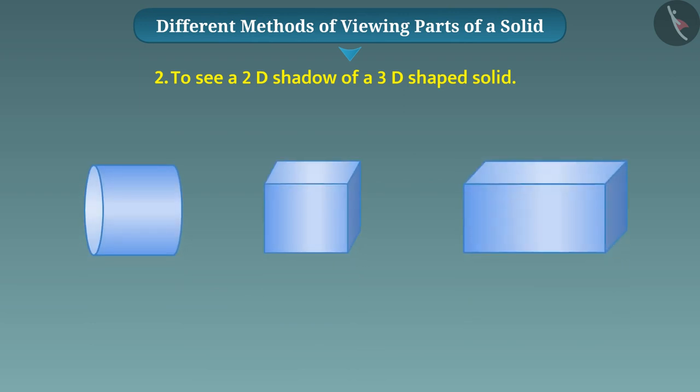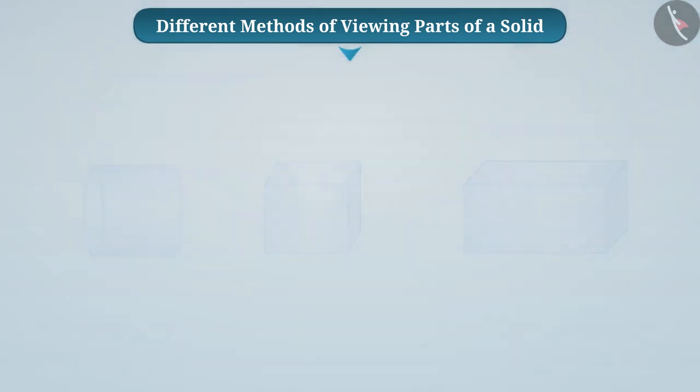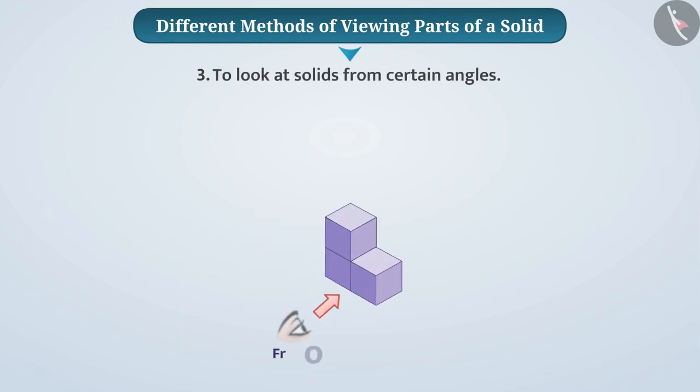The third method of looking at different parts of solids is to look at them from certain angles. For that, we view the solid from the front or from the side, that is, laterally, or from the top.